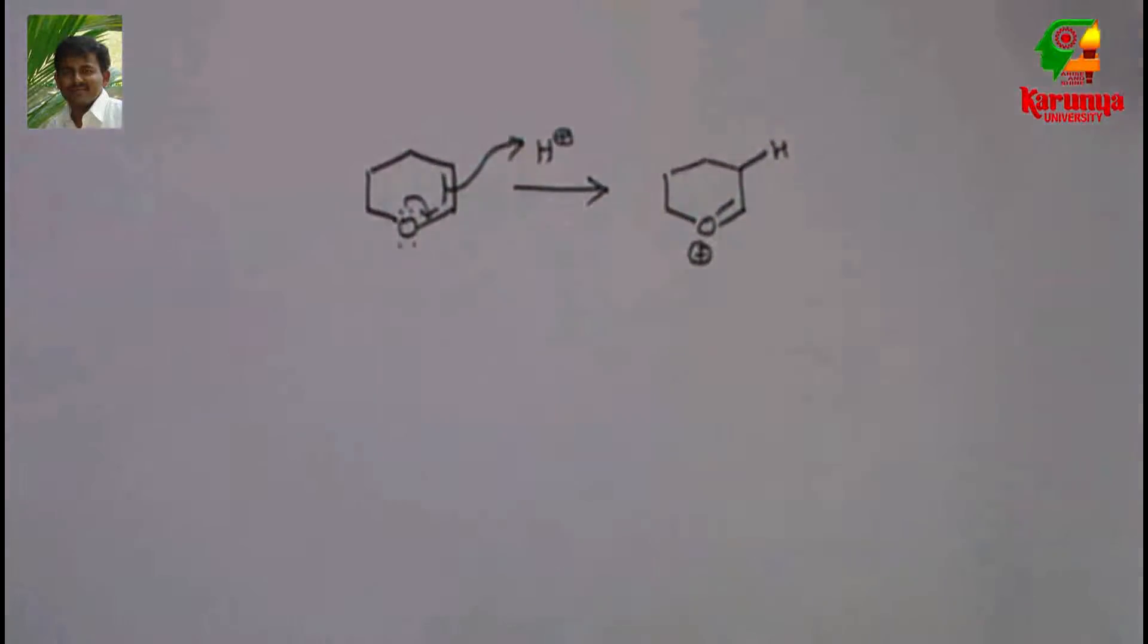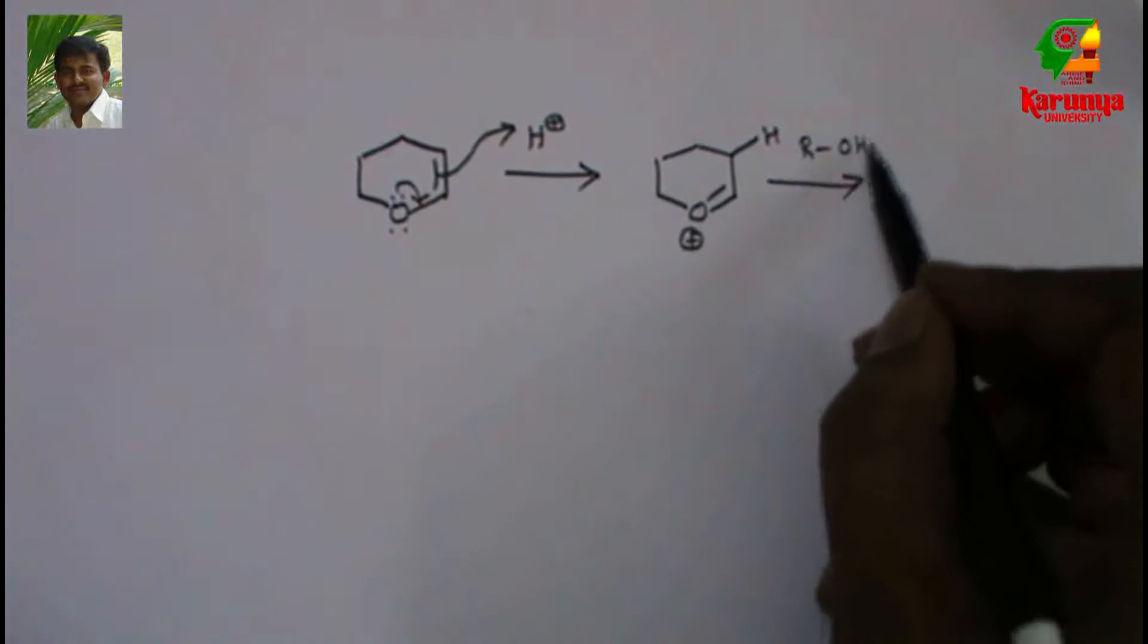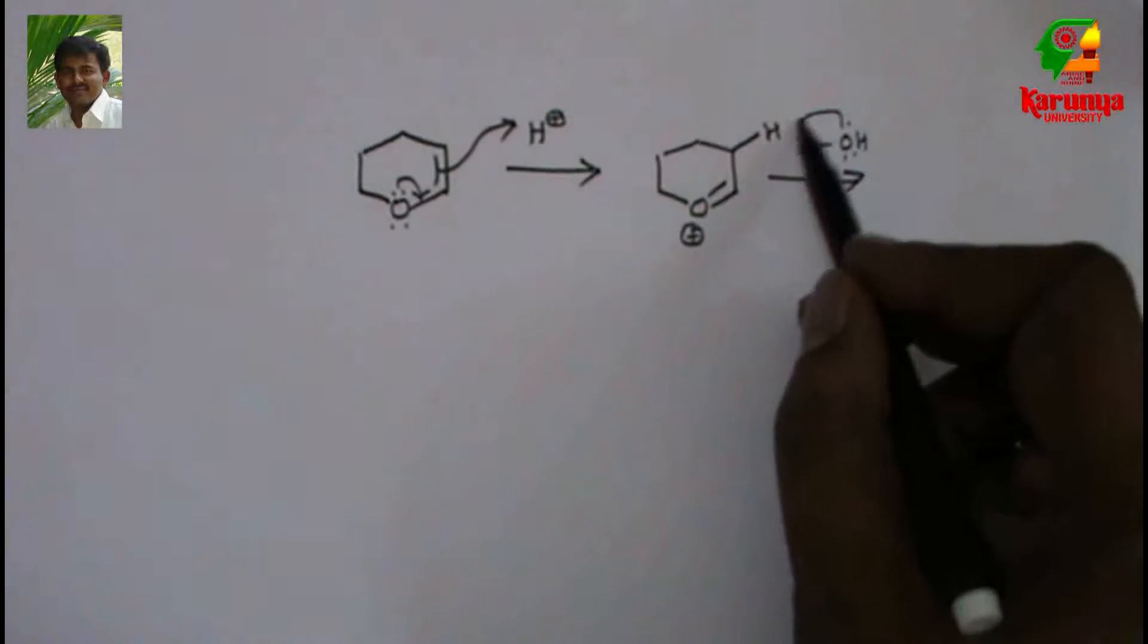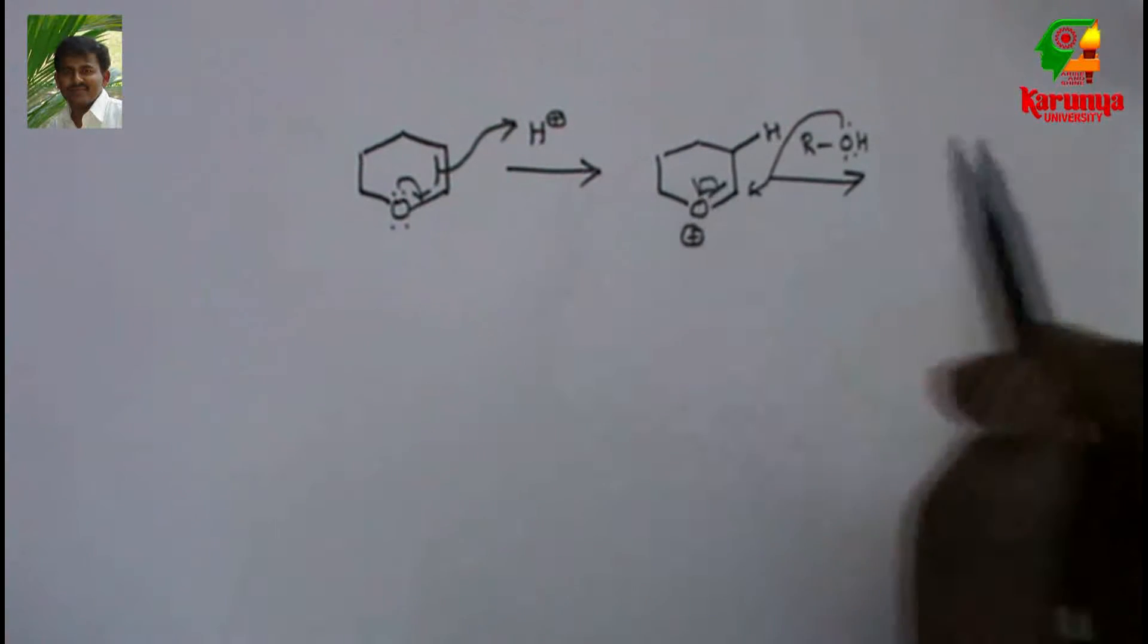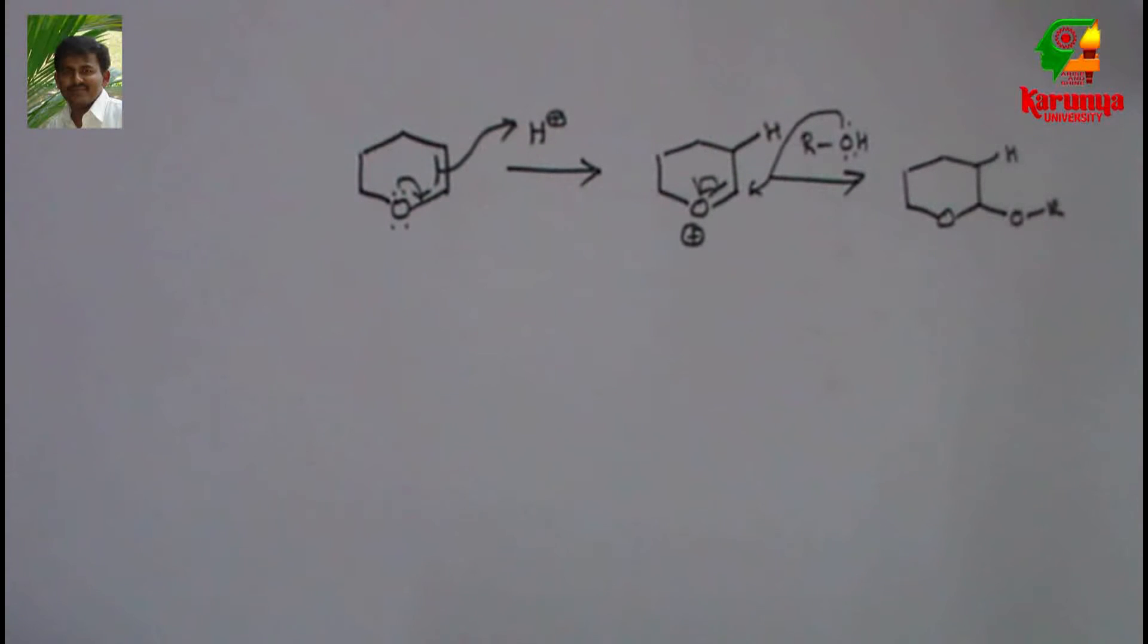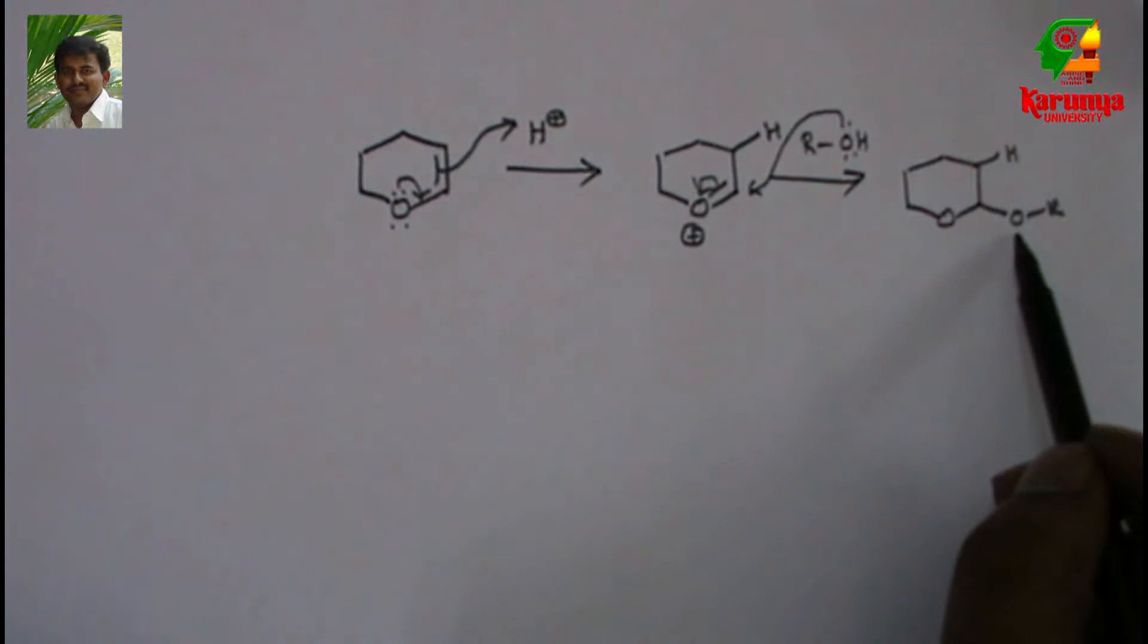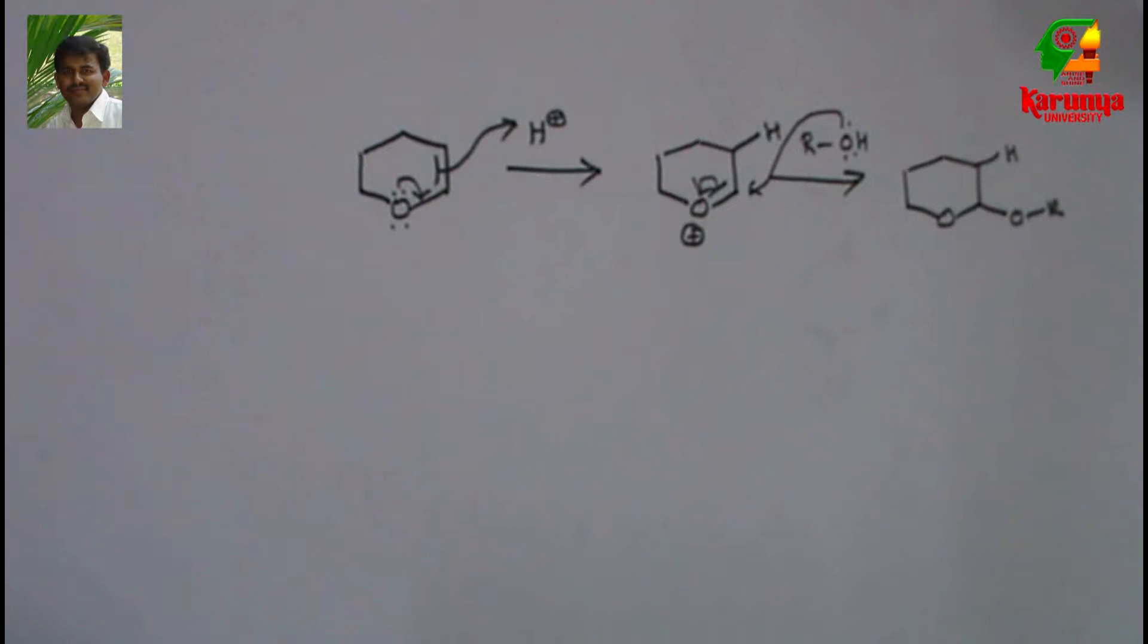and it adds to hydrogen. Now the alcohol attacks here, so what we get is like this. Basically it is hydromethoxylation: hydrogen and alkoxy group have been added to a double bond. So this is the mechanism of alcohol protection.